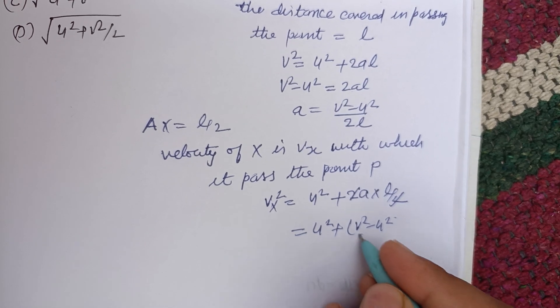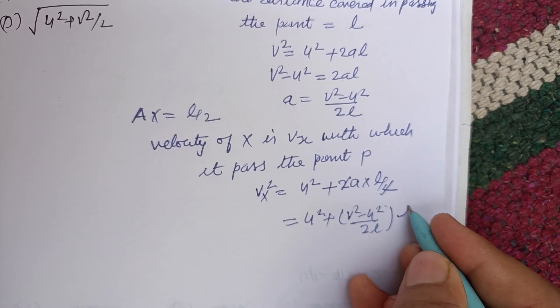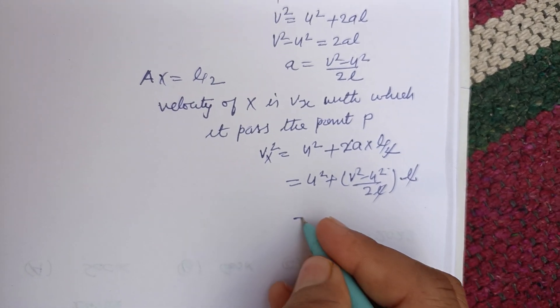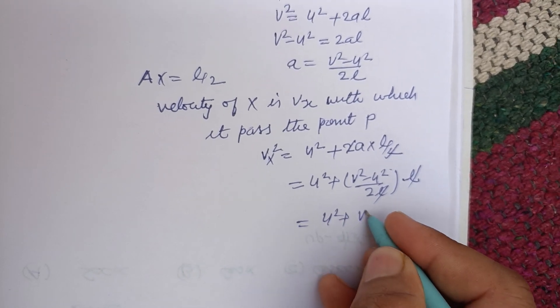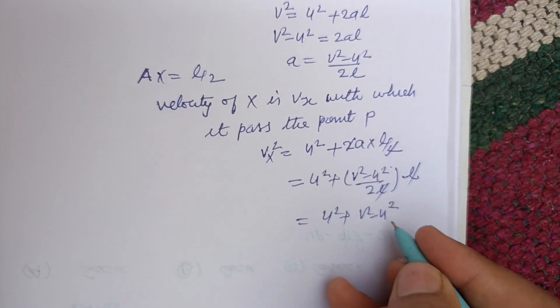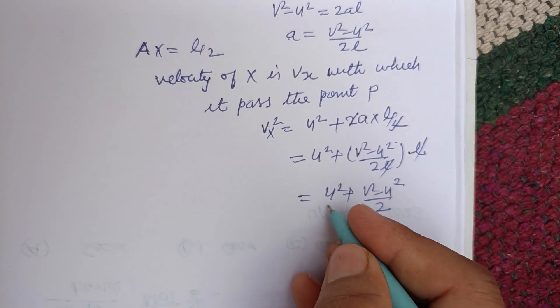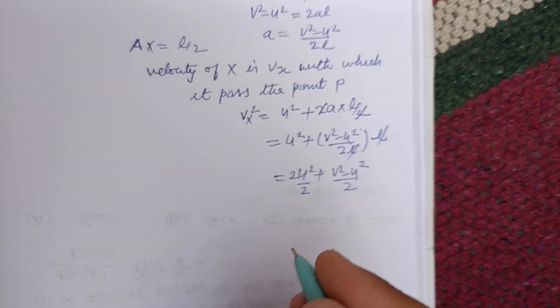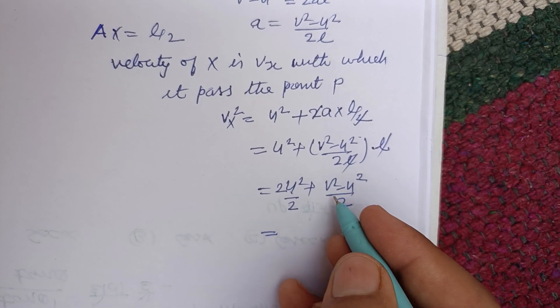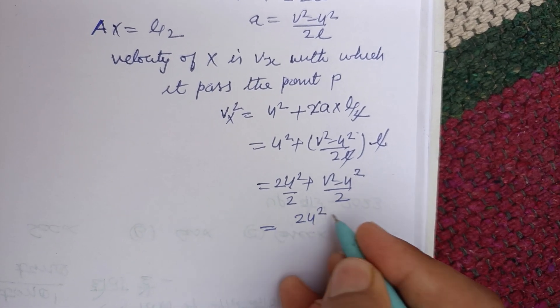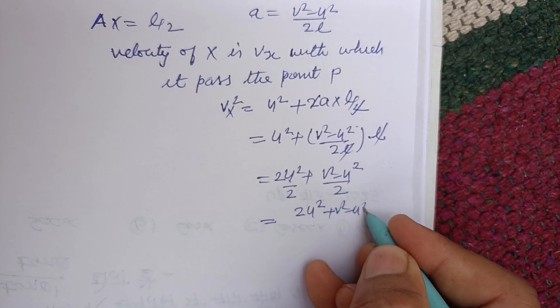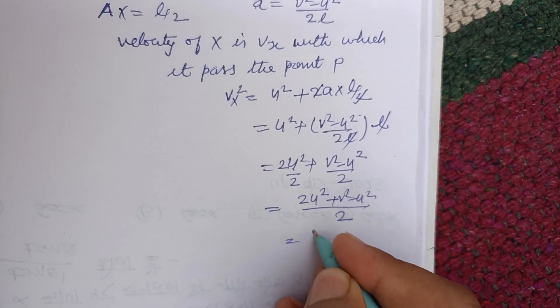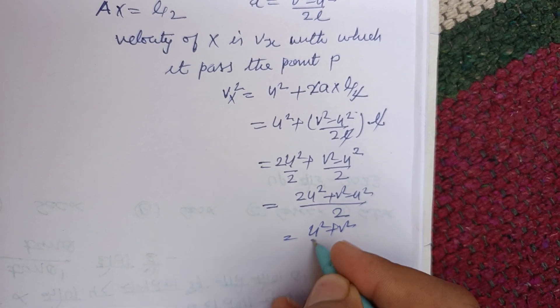Into L/2. L cancels, we get u² + (v² - u²)/2. Taking 2 in numerator and denominator, this is (2u² + v² - u²) / 2, so this is (u² + v²) / 2.